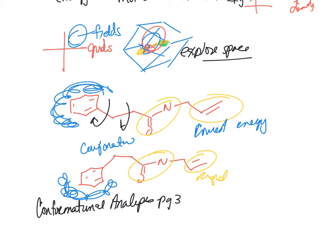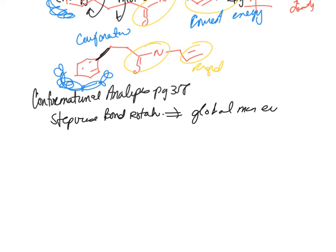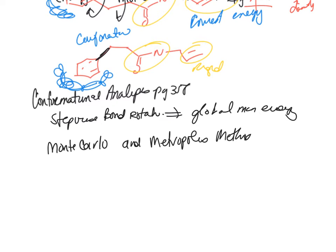What's happening is that for each bond you can do a stepwise bond rotation and try to find the overall global minimum energy. Some programs that do this are called the Monte Carlo and the Metropolis method. I'd recommend reading about those on pages 360 and 361 for your quiz — it talks about how these methods perform conformational analysis. You might want to compare how they're similar and different in finding that conformational analysis.